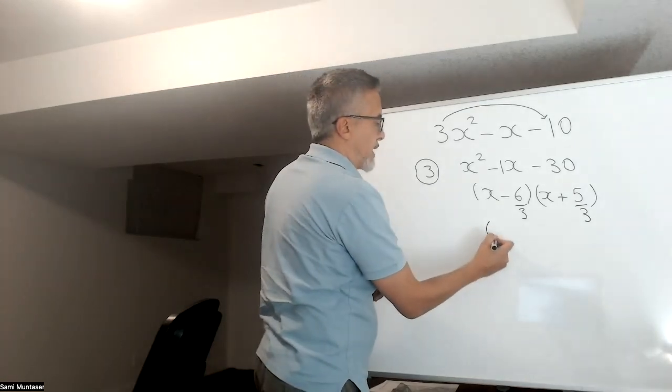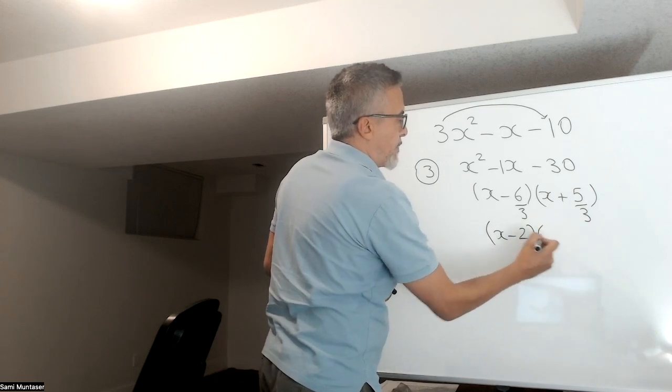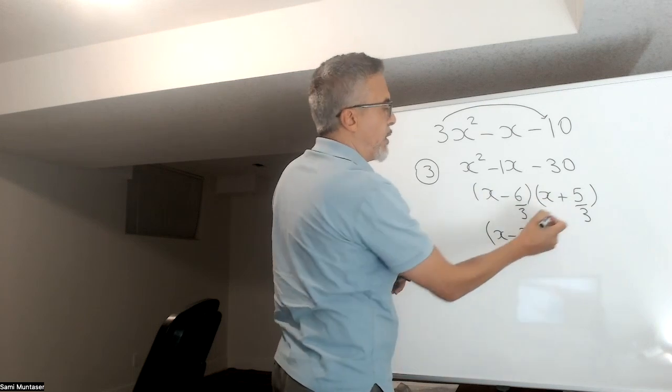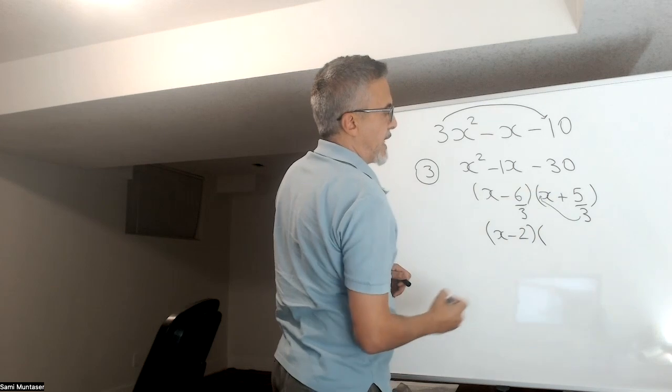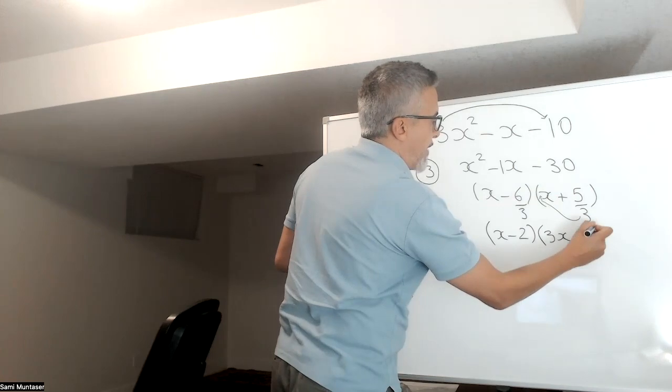And this will factor into x minus 2 because 6 divided by 3 is 2. But here, the 5 doesn't divide by 3. So all I need to do is just take this 3 here and stick it right in front of the x there. So that will give me 3x plus 5.